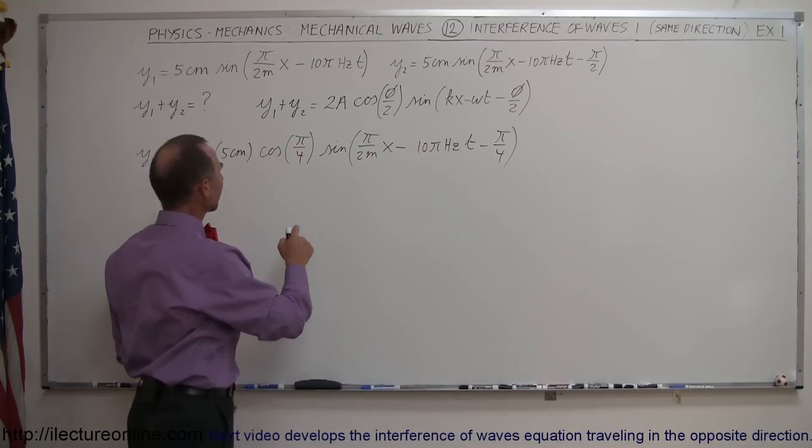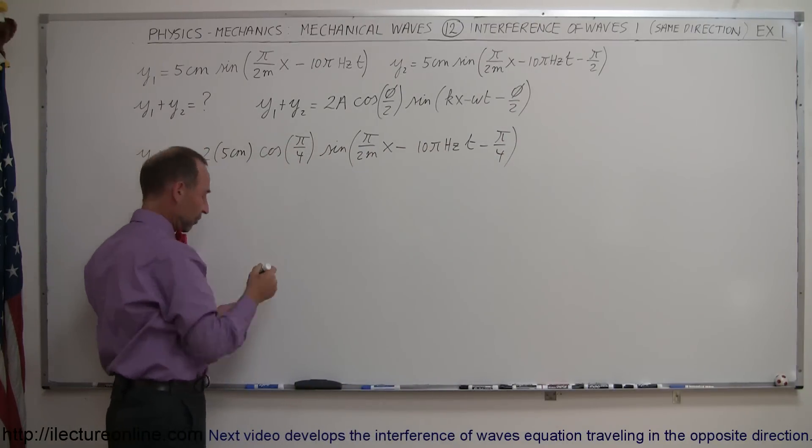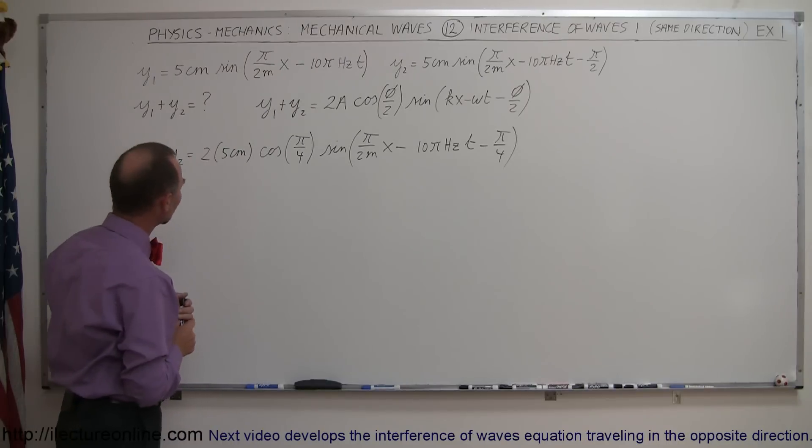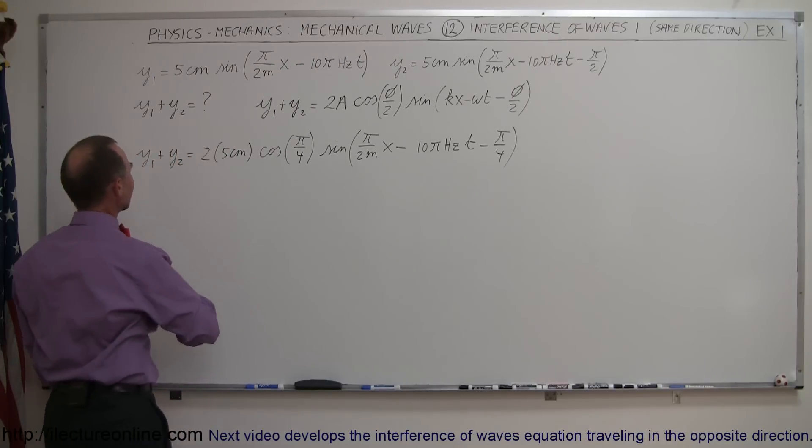Alright, now we can combine this a little bit more because the cosine of pi over 4, that's 45 degrees, that's 0.707, that would be 10 centimeters.